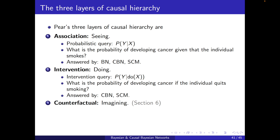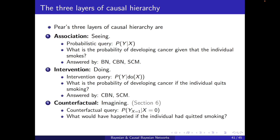The deeper level is counterfactual, or imagining. An example: what would have happened if the individual had quit smoking? So I'm talking about something in the past. The notation is: we observed that X was equal to zero, and now we want the probability of Y when X is forced to one — but about the past, not the present. We will address this in section six. This can only be answered by SCMs, because answering such questions requires information about the exogenous variables as well.